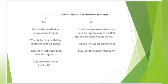If yes — the date of service falls within the global period range — then verify the fax number and the claim's mailing address to send an appeal. Also verify the timely filing limit for submitting an appeal, and get the claim number and call reference number. If no — the date of service lies outside the global period — then ask the representative to send the claim back for reprocessing, since the date of service lies outside of the waiting period.